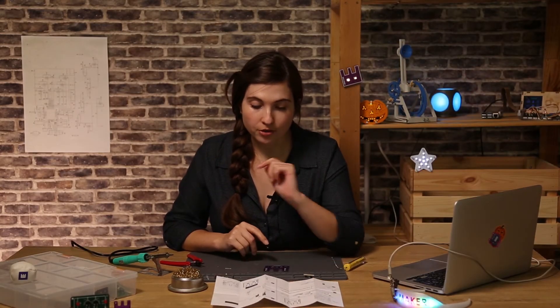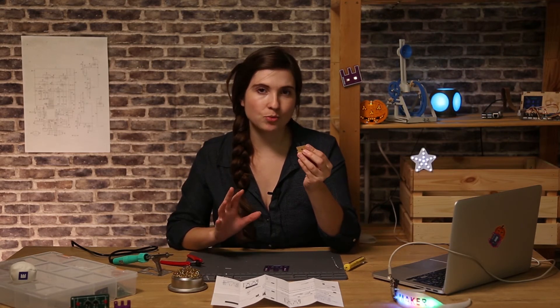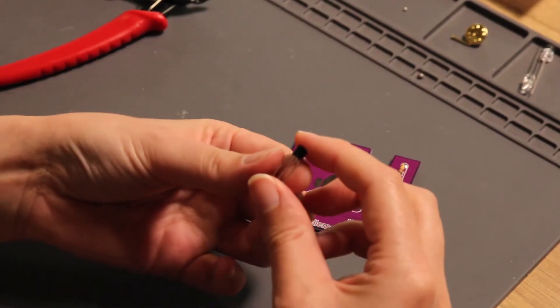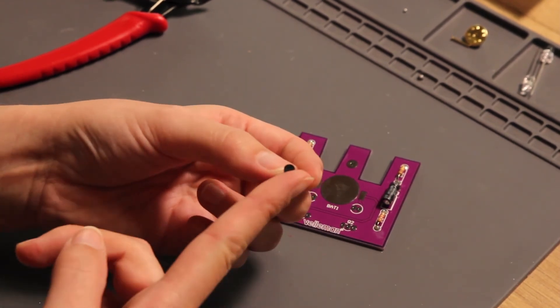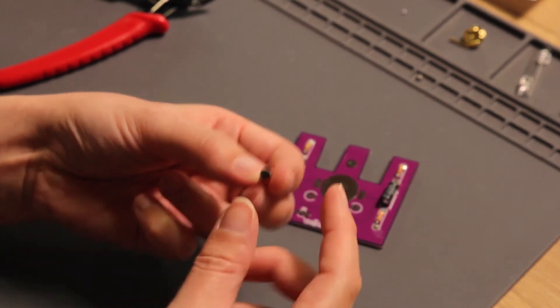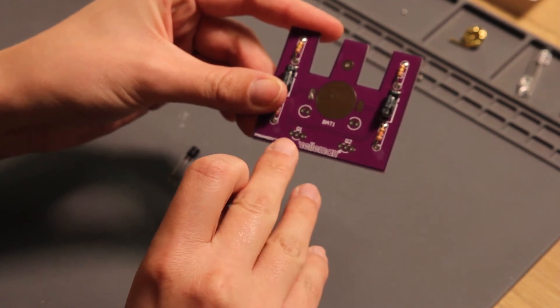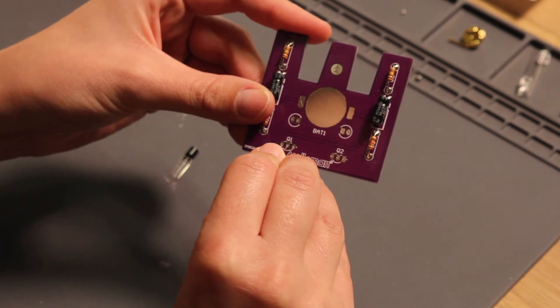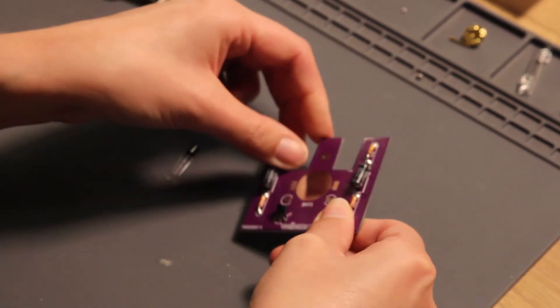The next components are the transistors. The transistors look like this and are a type of switch. They will make sure that our LEDs will blink. The transistor has three leads and a flat side and a round side. On the PCB you will notice that Q1 and Q2 also have a flat side and a round side. So we will place the transistor accordingly. Bend the transistor and then we are ready to solder.